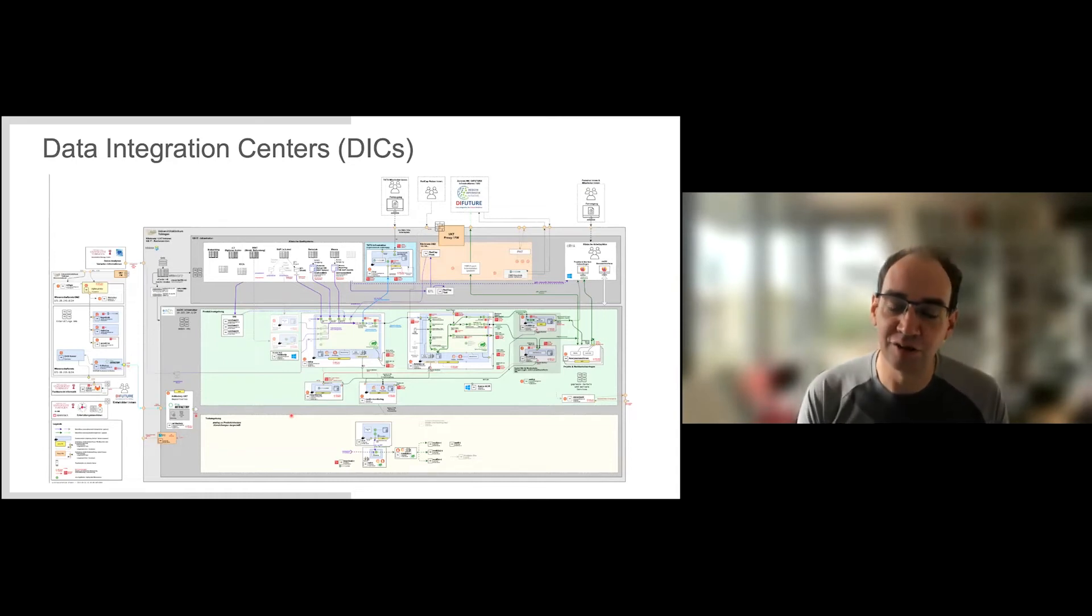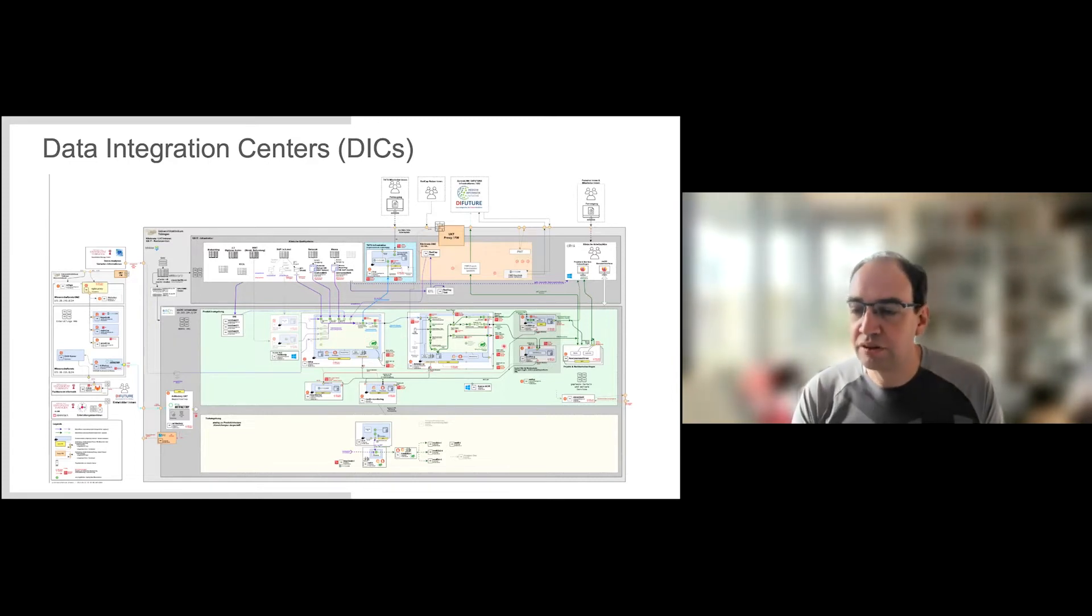The reality of such a data integration center is more complex. This illustrates all the moving parts that the Tübingen data integration center has. We scrape data out of lots of clinical systems. The University Hospital in Tübingen has more than 400 different IT systems. We scrape it out, put it into a data lake, and then have an ETL pipeline that transforms the data and makes it accessible in the cloud environment. This has been established so we can pull clinical data in a structured manner and do privacy-preserving record linkage to genomics data sets.